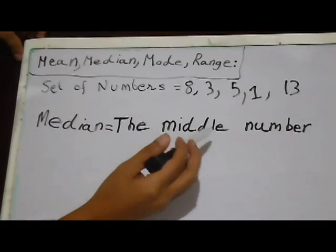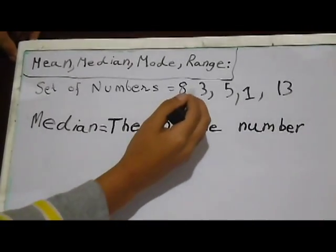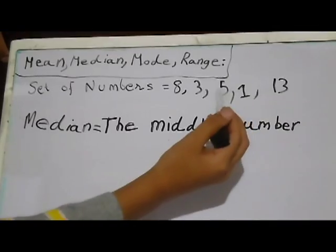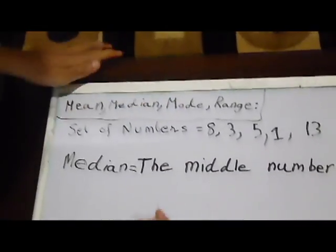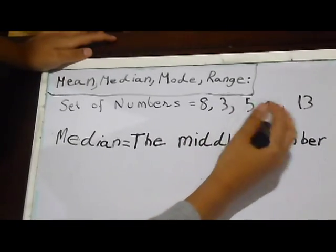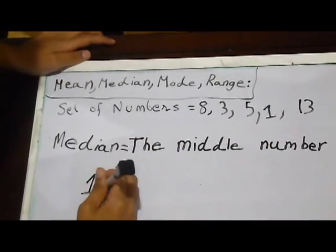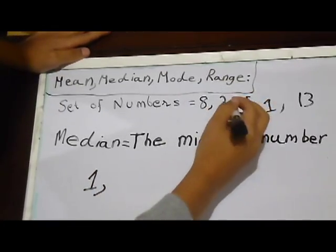The median equals the middle number. So, for that, we have to align all these numbers, all these five numbers from small to large. Okay, do you get me? So, the first one would be 1, and the next one would be 3.